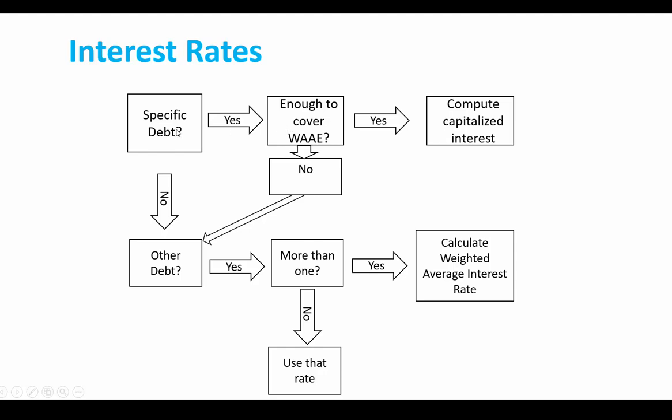If the specific debt is not enough to cover your weighted average accumulated expenditures, then you look to see is there other debt. If there's other debt, then we have to see if there's more than one. If there's not more than one, so if you have specific debt and then you have one other debt, you could just use that rate on the other debt. If you have a specific debt and you have more than one other debt, then you're going to have to calculate a weighted average interest rate. Now I know this is very complicated. It is probably confusing, but hold on, and let's take a look at our example. And when you see the example, it's going to make a lot more sense.